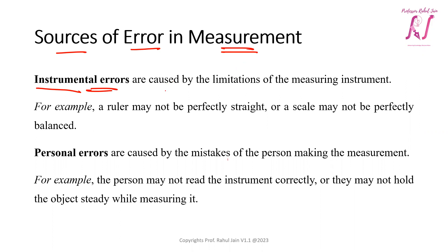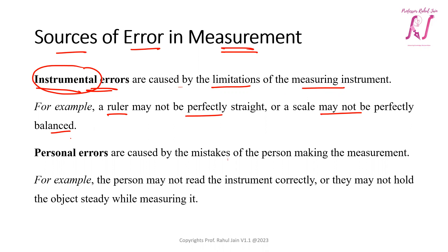When we measure some kind of entity or object, the errors caused by instruments are called instrumental errors. They are caused due to limitations of the measuring instrument. For example, a ruler may not be perfectly straight, a scale may not be perfectly balanced, a ruler may be broken or not perfectly calibrated.